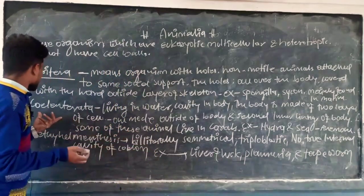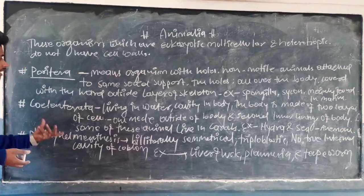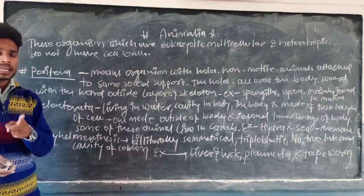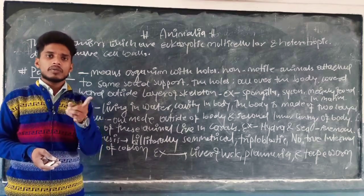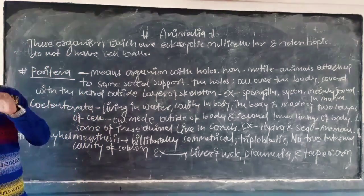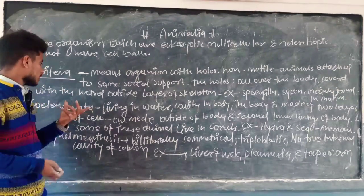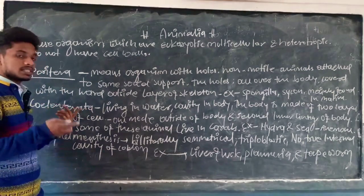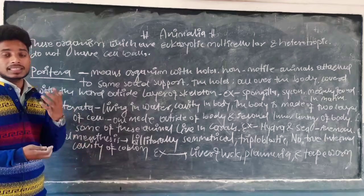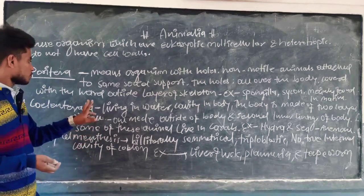Now let's look at the second type: Coelentrata. What is the meaning of Coelentrata? It is the second category — sub-category of the invertebrate group in the animal kingdom. In animal kingdom के invertebrate group के sub-category में second number पर Coelentrata को रखा गया है। इसके character क्या हैं और इसके examples कौन-कौन से हैं, इसको देखते हैं।